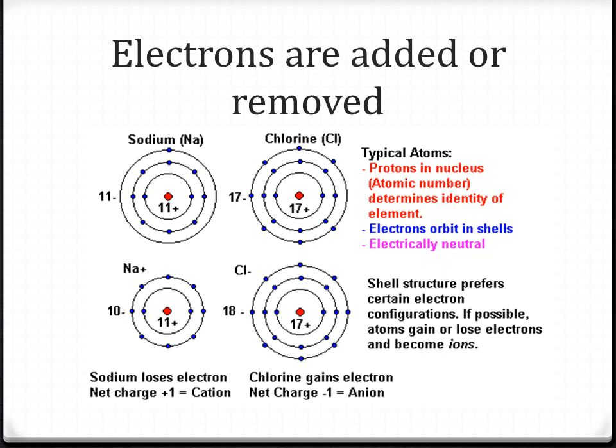Chlorine has 17 protons and 17 electrons. It tends to gain electrons. Chlorine gains one electron. It will have 18 electrons and 17 protons. The net charge is a minus one, and that's the chloride anion.